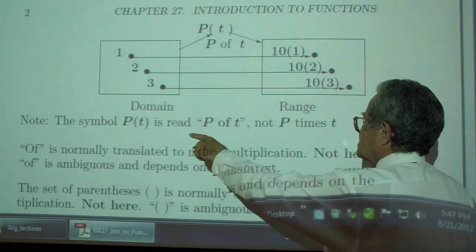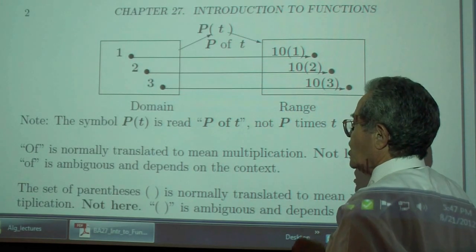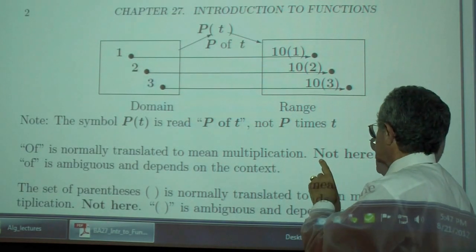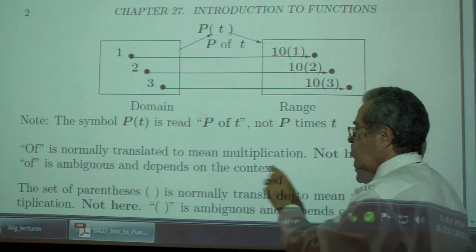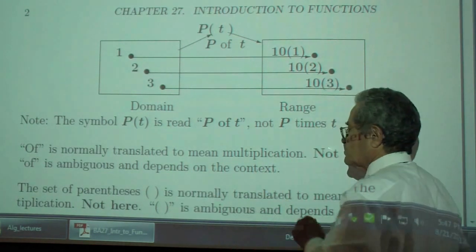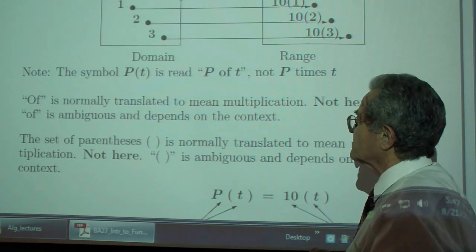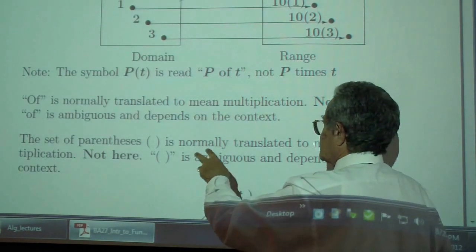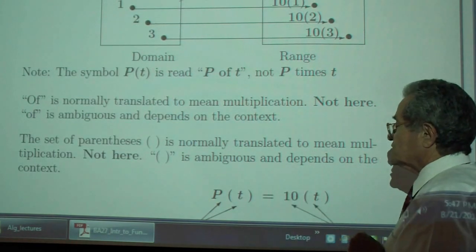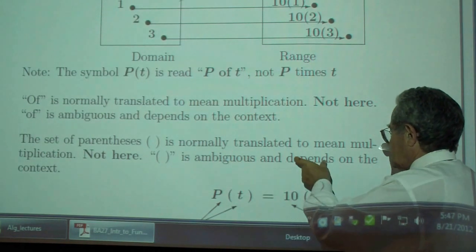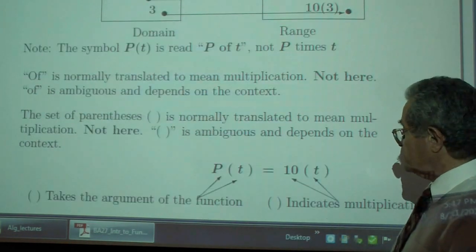Again, the symbol P of T is read P of T, not P times T. Of is normally translated to mean multiplication, but not here. Of is ambiguous and depends on the context. The set of parentheses is normally translated to mean multiplication. Not here. The same parentheses is ambiguous and depends on the context.